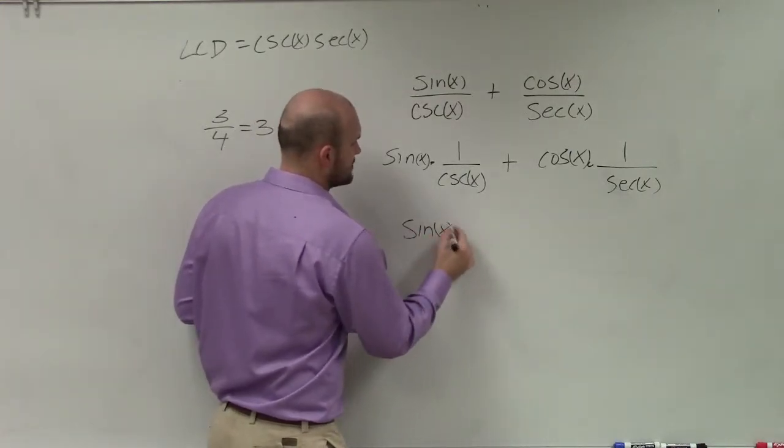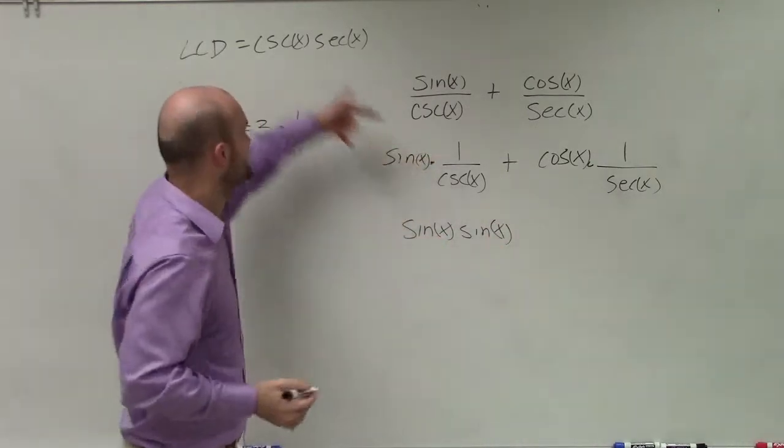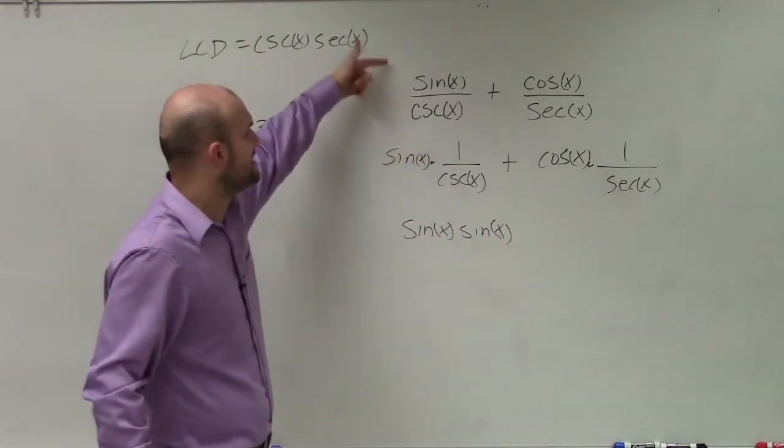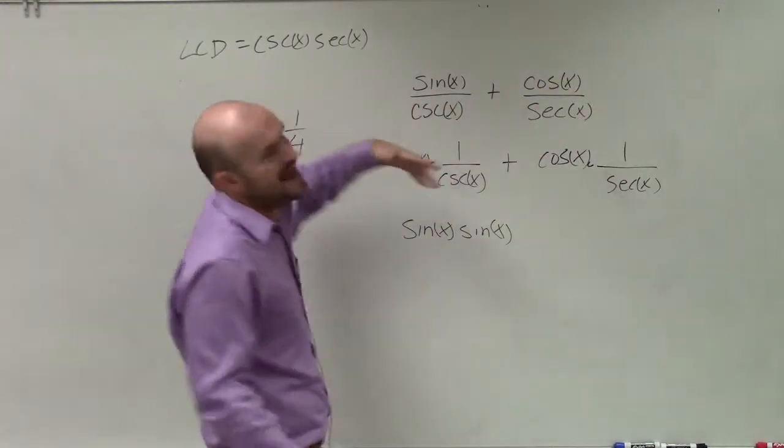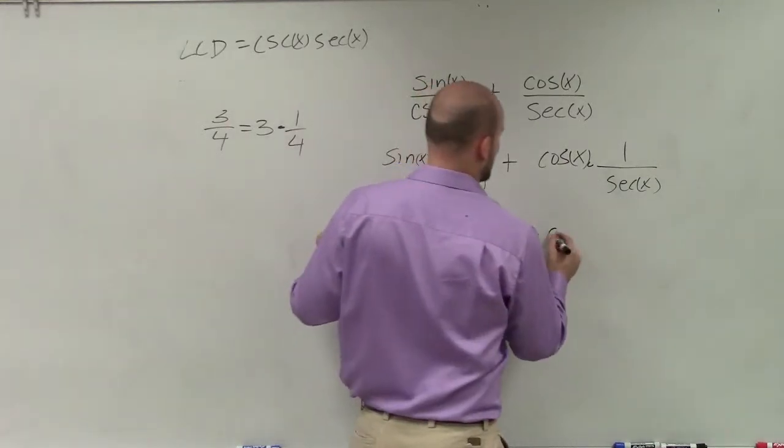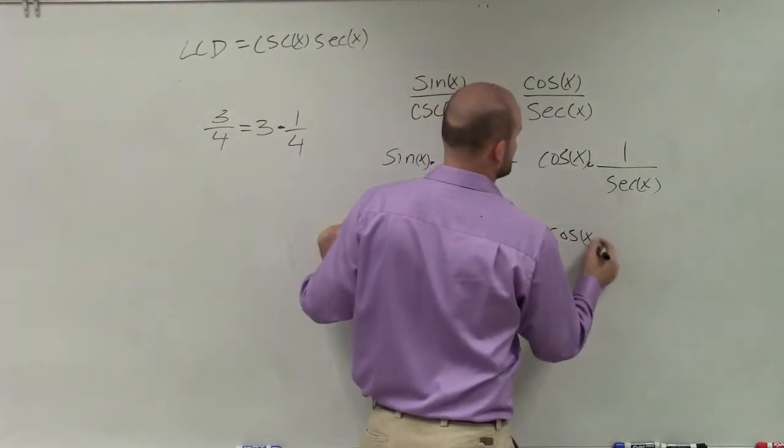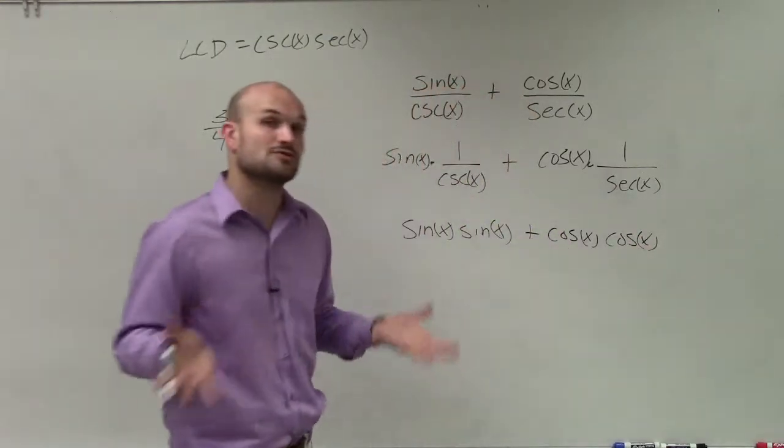And you would have found out this exact same thing if you would have multiplied this by secant over secant and here by cosecant over cosecant to try to add up the fractions. You would have got the exact same thing. But here, I have cosine of x times cosine of x, as 1 over secant is equal to cosine of x.